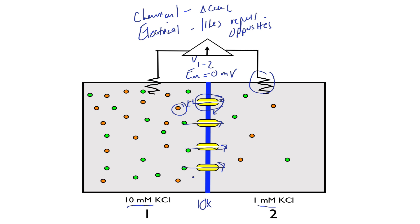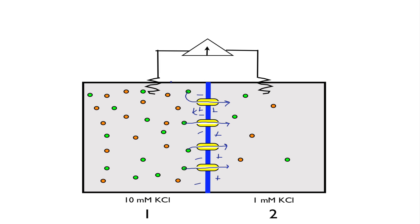Now, this will happen for a time. But as the potassium ions are moving, an electrical potential begins to form. Now, why is that? Well, because there's an imbalance between the positive and negative charges. The potassium ions are moving into compartment two. But they're leaving behind the chloride ions in compartment one. So we're getting net positive charge in compartment two and net negative charge in compartment one.